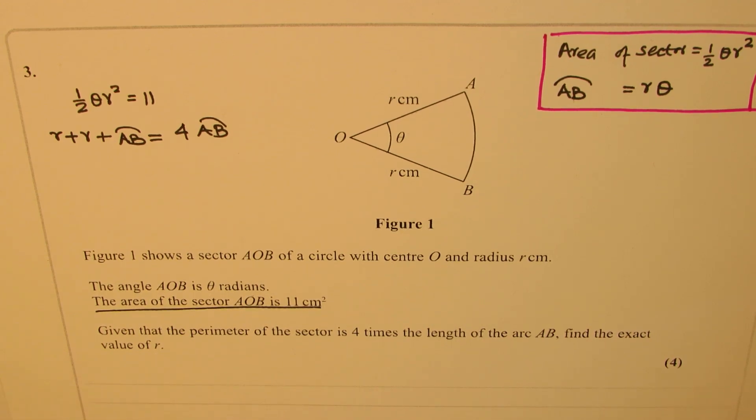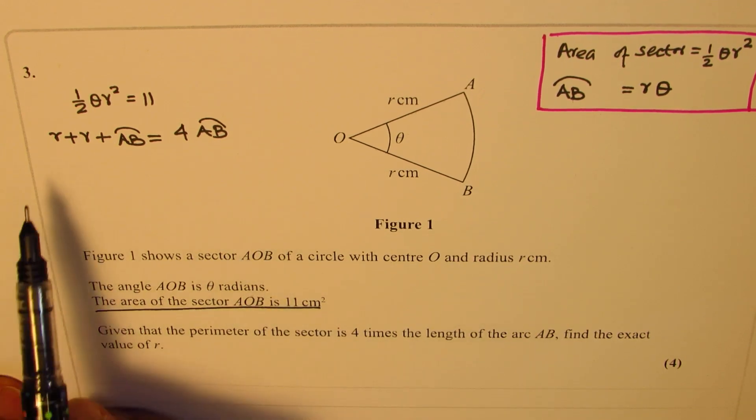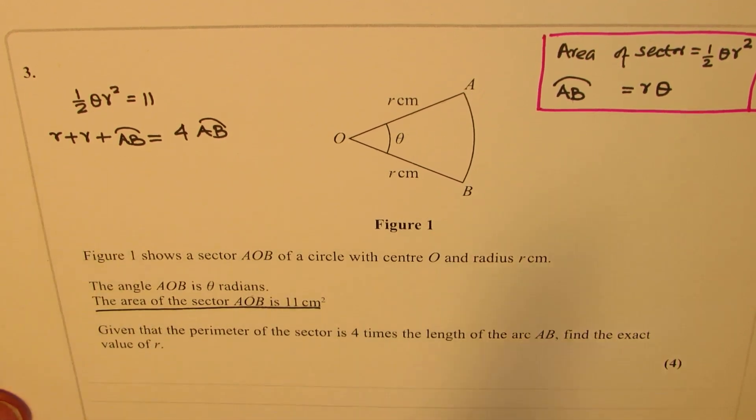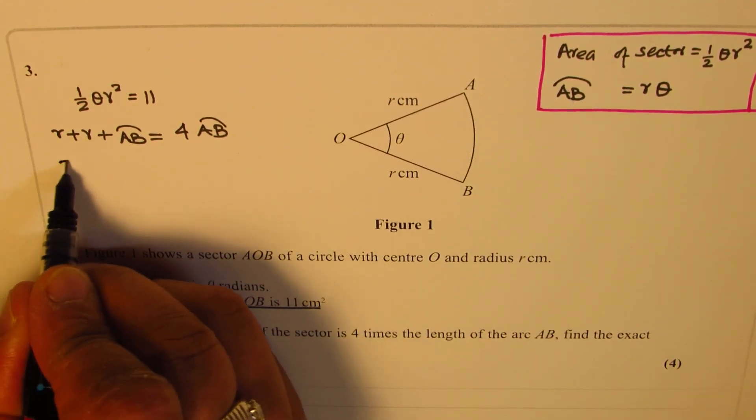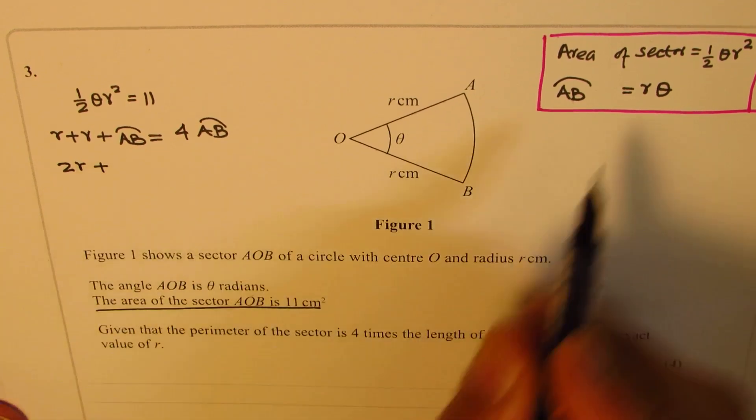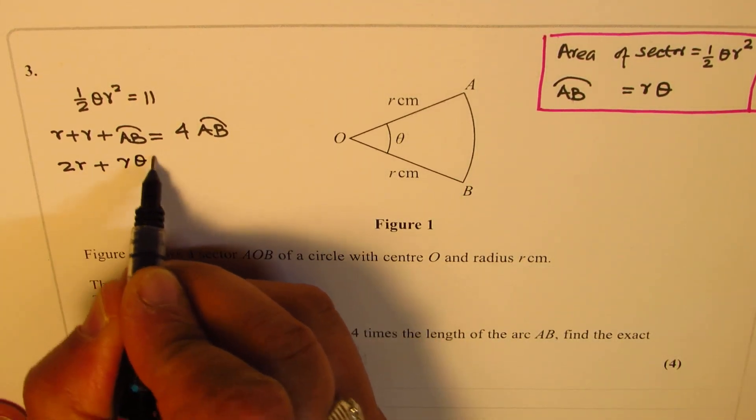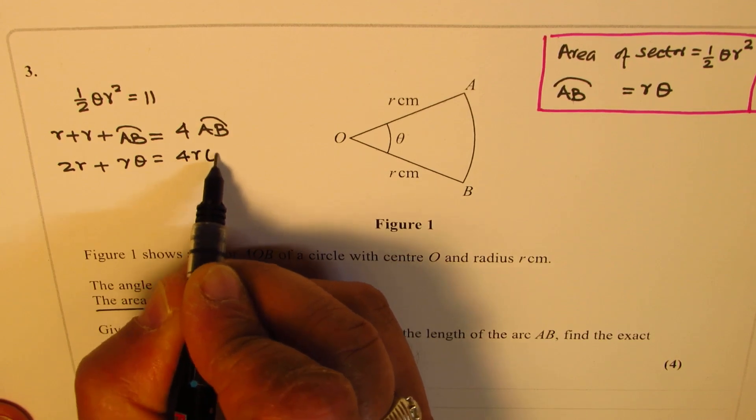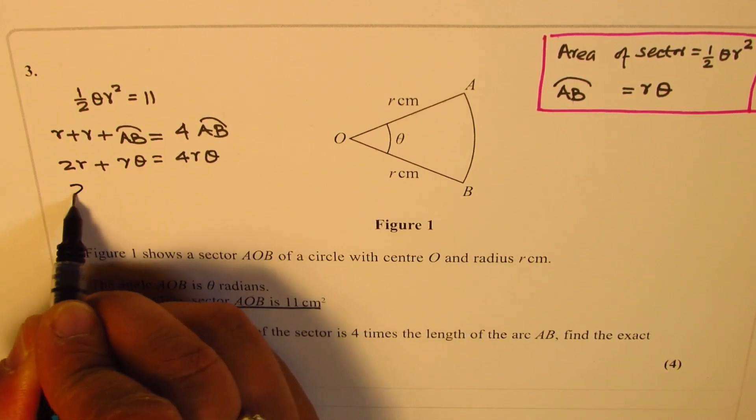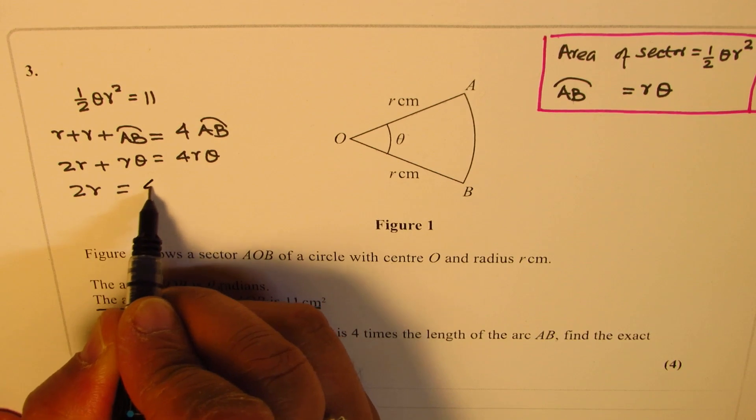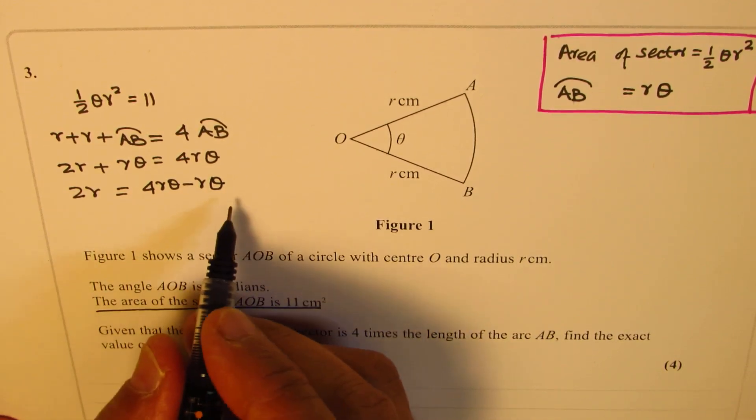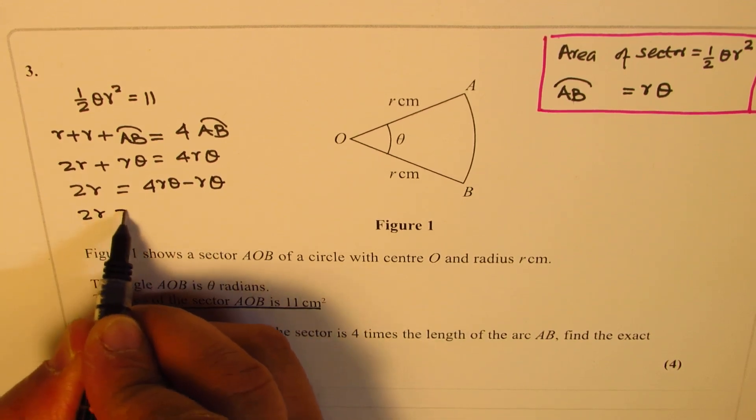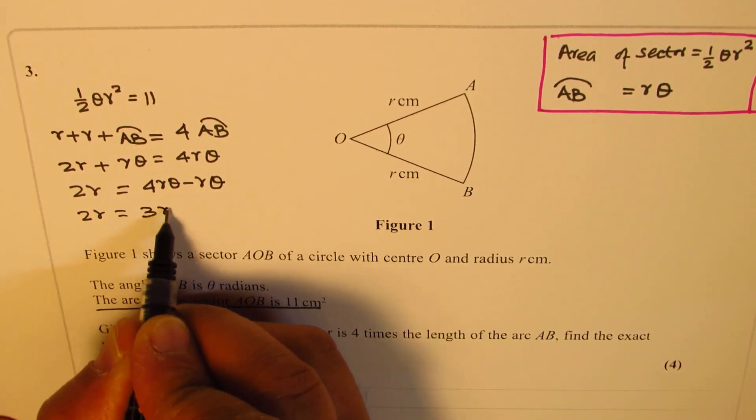Now since we need to find r, first let's write AB in terms of r theta. So we get r plus r is 2r plus r theta equals to four times r theta. Take it on the other side, so we get 2r equals to 4r theta minus r theta. So we get 2r equals to 3r theta.